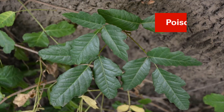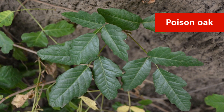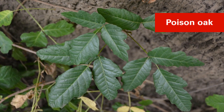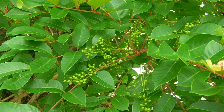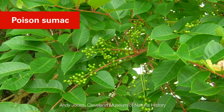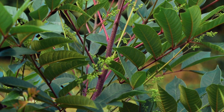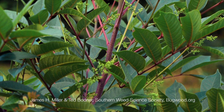Poison oak is a small shrub that tends to prefer drier habitats, especially the sandhills, and has lobed leaves that may resemble oak leaves to some. The leaves of poison oak tend to be hairier along the veins and mid-ribs than most varieties of eastern poison ivy. Poison sumac is a small tree with alternate leaves, opposite leaflets with smooth margins, and typically a reddish rachis.